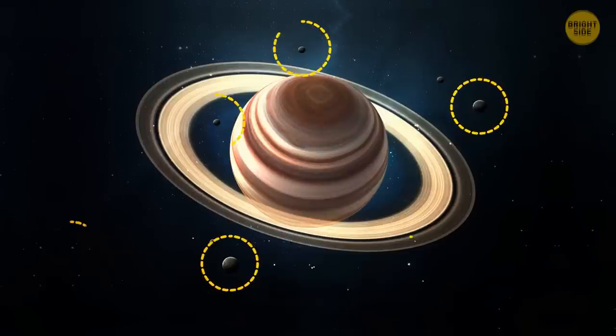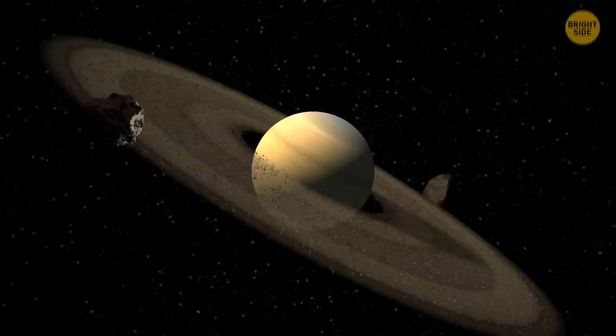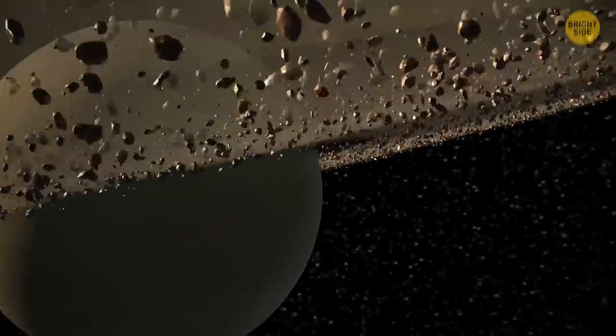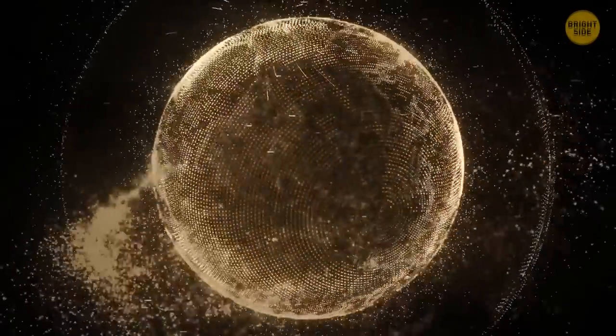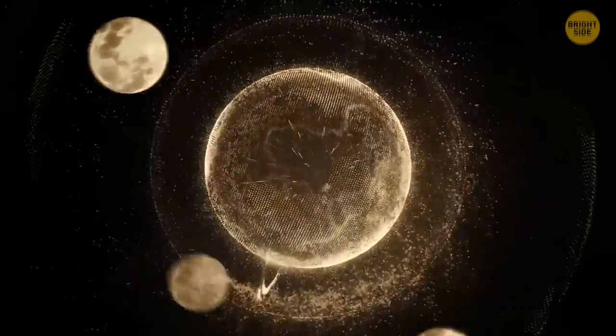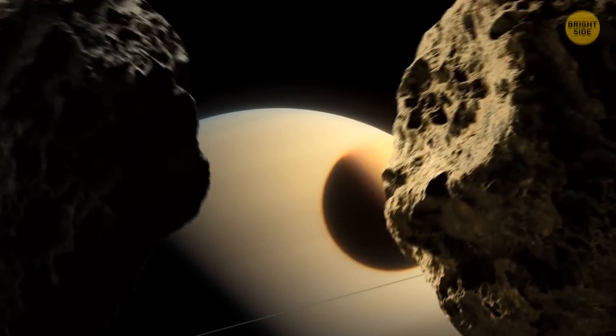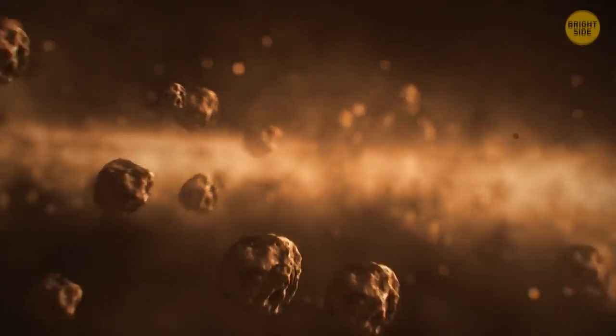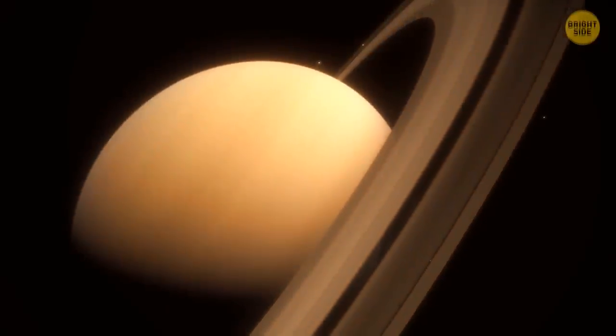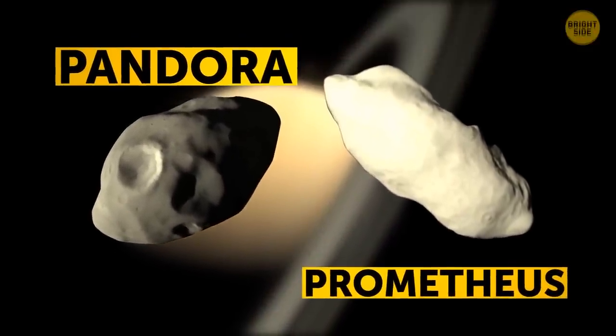Saturn has more than 50 confirmed moons. Two of them, Pandora and Prometheus, flank the F ring on either side. They weave outside and inside the ring, acting like shepherds. They herd ice particles into a 60-mile-thick band. But why are they performing this elaborate dance? No one knows. What scientists do know is that when Saturn's rings were evolving, icy material clumped together and formed moonlets. Some of them grew and turned into the planet's largest moons. But two of them collided. That's how the mysterious ring F appeared. If the moonlets had only been made up of small, icy particles, the space collision would have left a ring and nothing else. But they had dense, rocky cores. Those remained intact and turned into Pandora and Prometheus.